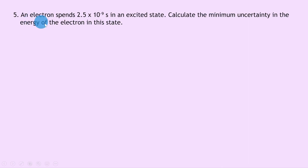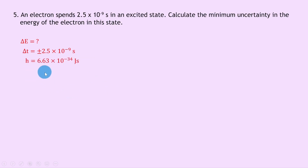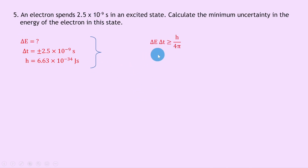Question 5 says an electron spends 2.5 times 10 to the minus 9 seconds in an excited state. Calculate the minimum uncertainty in the energy of the electron in this state. Writing down what we know: we're trying to find the uncertainty in the energy. The uncertainty in time delta T is plus or minus 2.5 times 10 to the minus 9 seconds, and Planck's constant h is 6.63 times 10 to the minus 34 joule seconds. Writing the equation: delta E times delta T is greater than or equal to h over 4 pi.